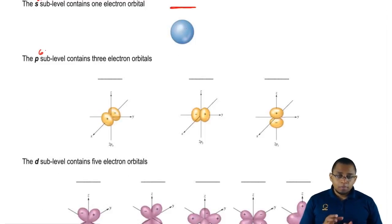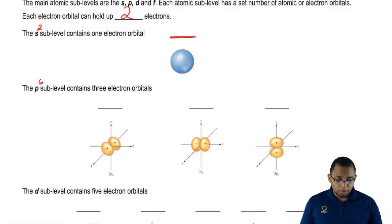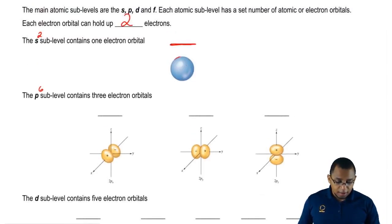Now, also remember that each one of these sublevels has a shape distinct to them. In S, we only have one electron orbital, so we only have one shape, and it's a sphere.